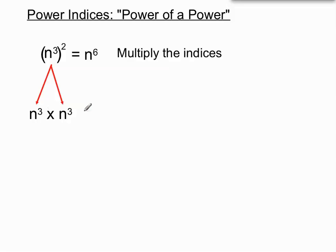So when we have n cubed squared, anything that gets squared is multiplying by itself. So that would mean n cubed is multiplying by itself. So I've written it out here.